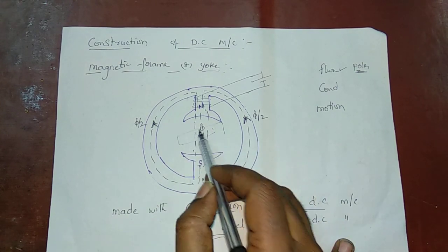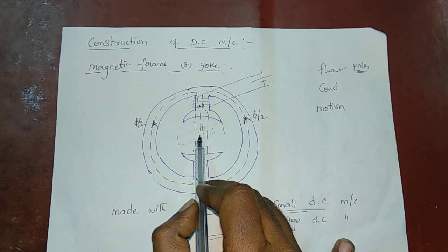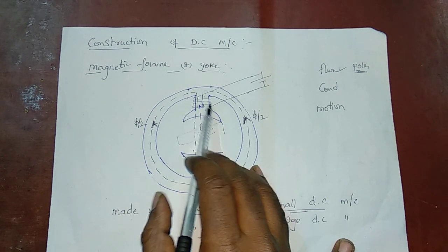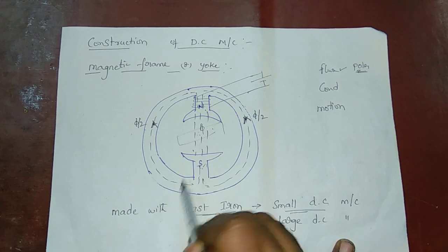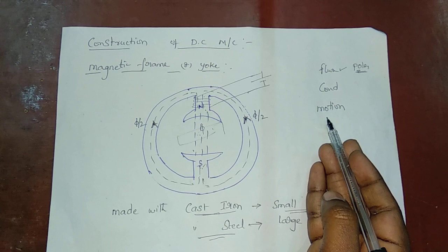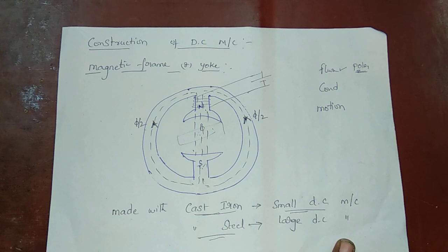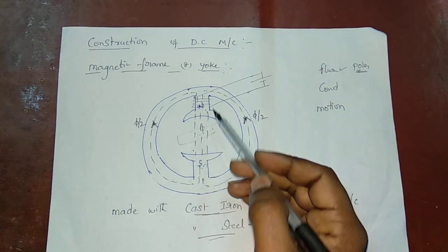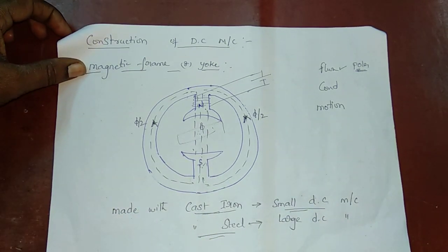The conductors are placed in the armature. We place the armature conductor at the center. The field coil is at the center, and the armature conductor is in the field. We also have relative motion. The armature is coupled with a turbine; when the turbine rotates, the armature rotates. The armature conductor then cuts the flux.